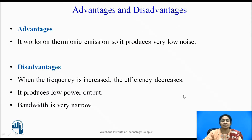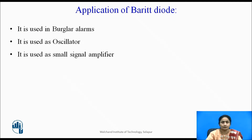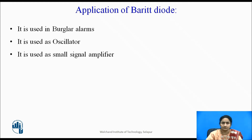The advantage of the BARITT diode is that it works with thermionic emission, so it produces low noise. The disadvantage is that when frequency is increased, efficiency decreases and it produces low output power, with a narrow bandwidth. Application areas include use as a burglar alarm, as an oscillator in various microwave frequency applications, and also as a small signal amplifier.